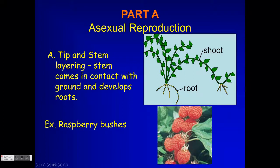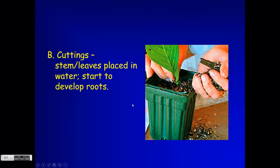This can happen naturally over time as raspberry stems grow longer. Some people encourage this by forcing the stem down and covering it with a rock, and then the next season they'll have a new set of roots and stems — so they can grow their raspberry patch a little bit faster.